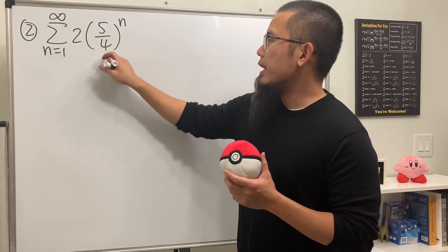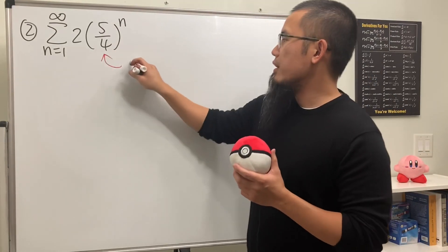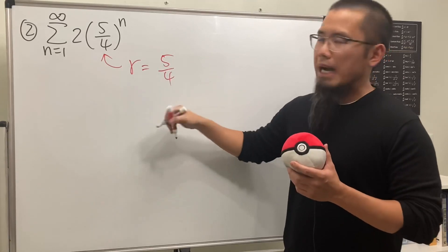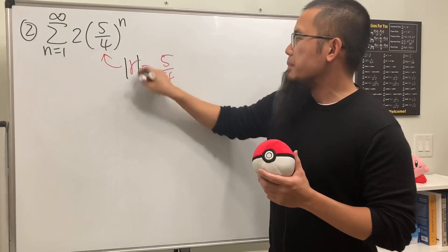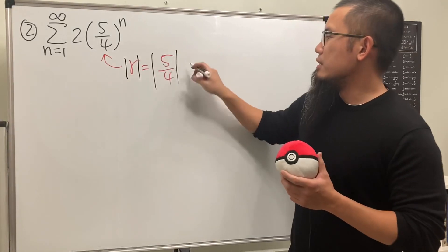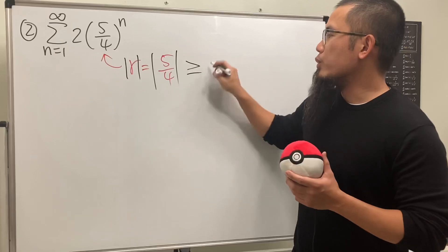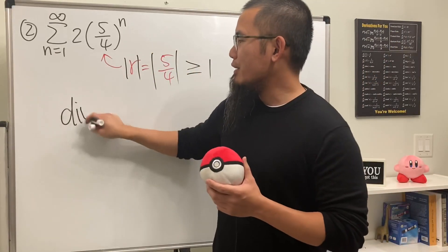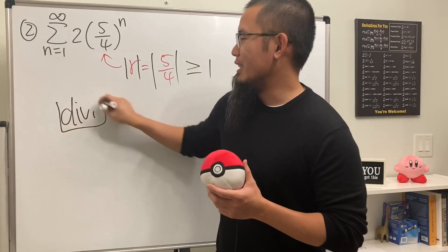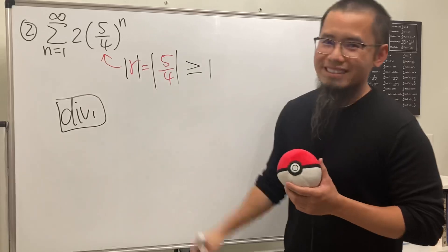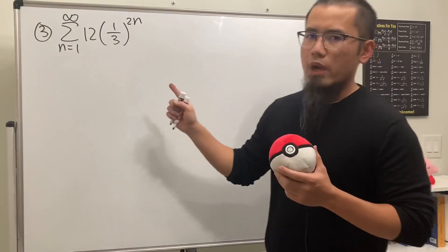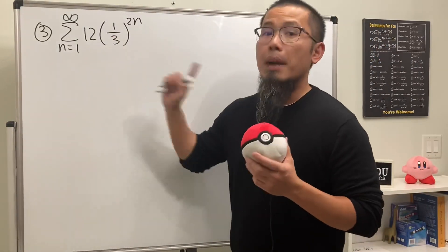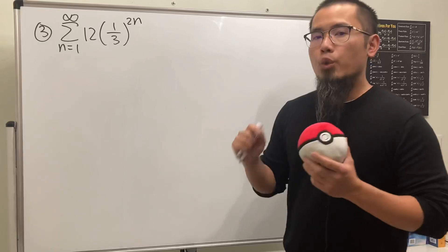For number two, because of the term raised to the power n, the common ratio is five over four. Since the absolute value of this is greater than or equal to one, this series diverges. For number three, the common ratio is not one over three because we have 2n in the exponent.